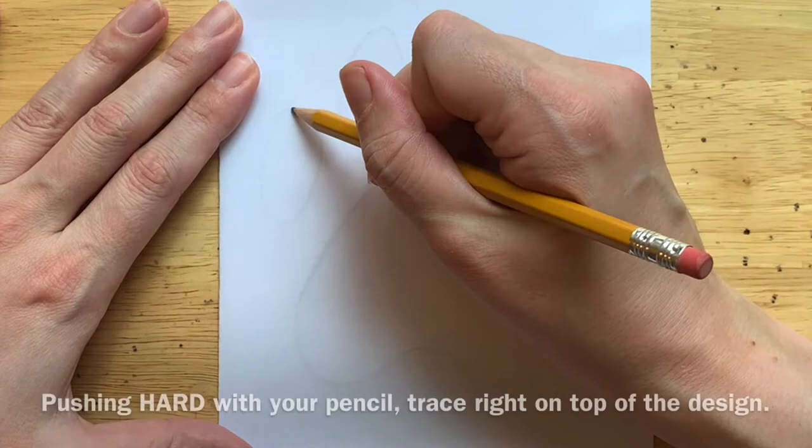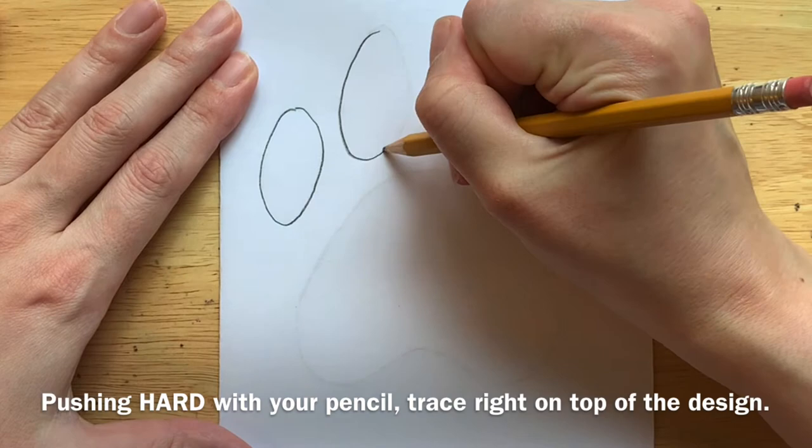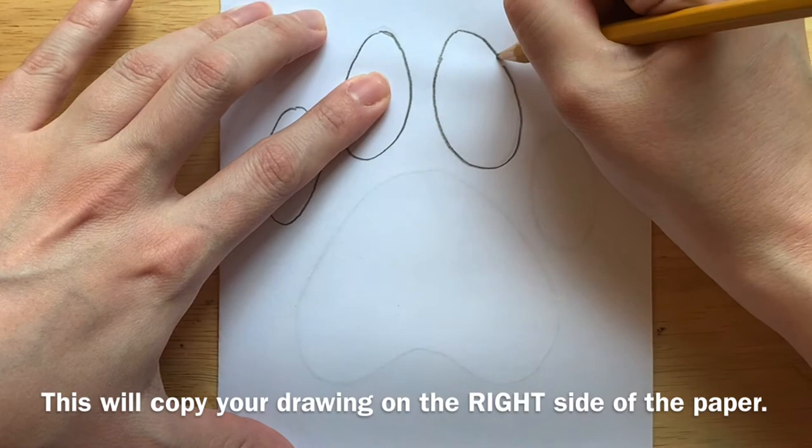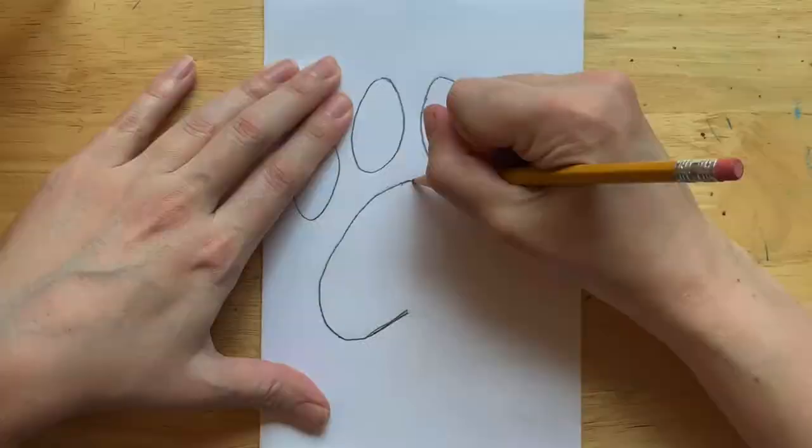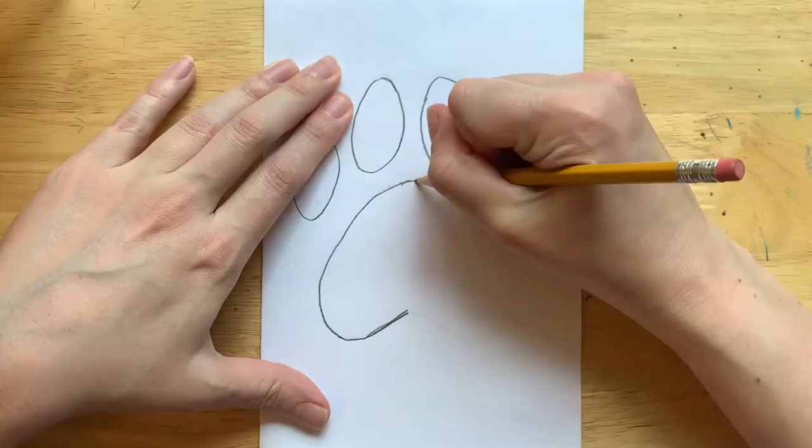This is going to copy your image on the right hand side of your paper, creating a mirrored image. In order for this to work, you must make sure that you are tracing right on top of your design.